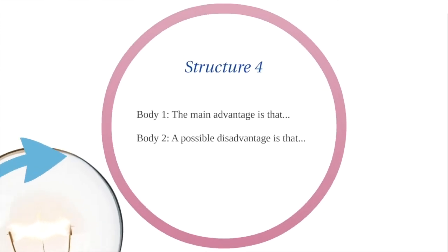Now the fourth example: Body 1 - the main advantage, Body 2 - the possible disadvantage. Writing this way means maybe it's a discuss the advantages and disadvantages of this trend or situation. Some question type asking you to discuss both advantages and disadvantages.